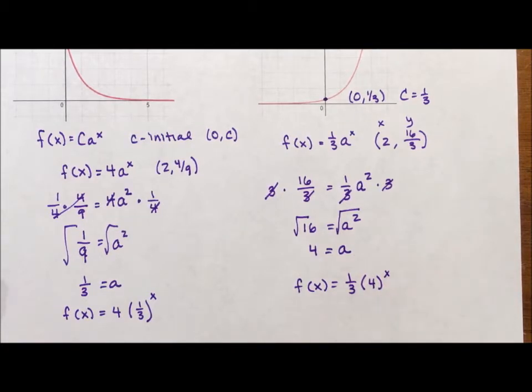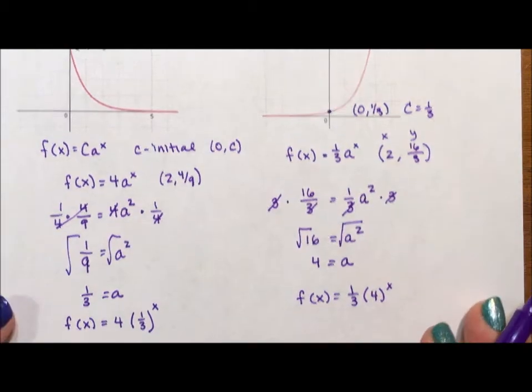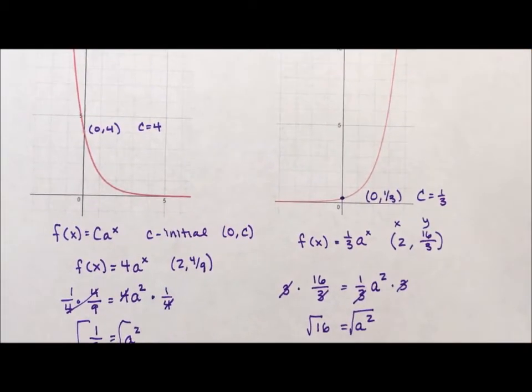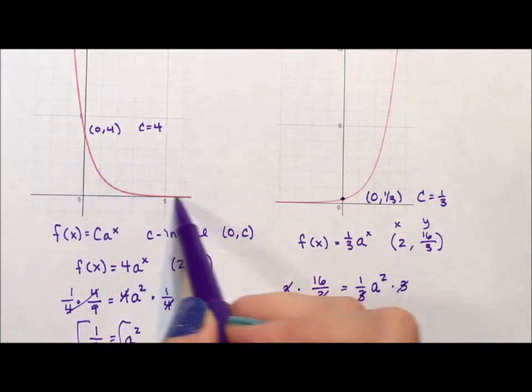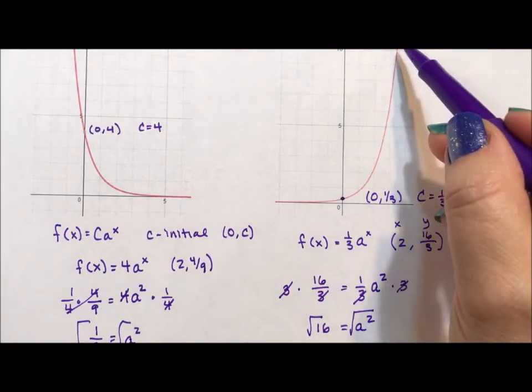So notice that the two equations are using the same numbers, 4 and 1/3. But the order really matters. When the initial value is 4 and our factor is 1/3, we decay. When our initial value is 1/3 and our growth factor is 4, we grow.